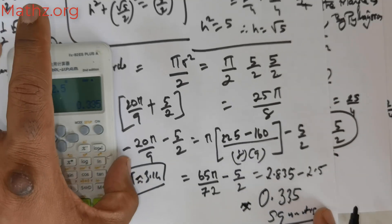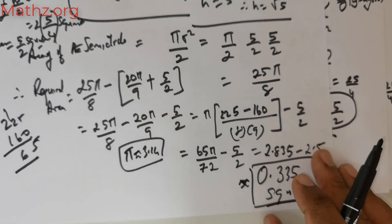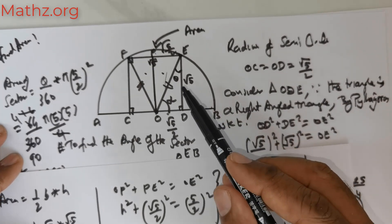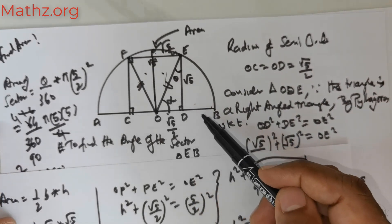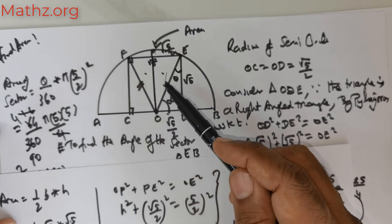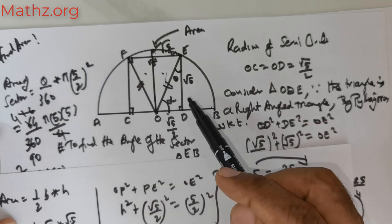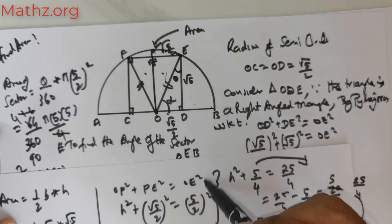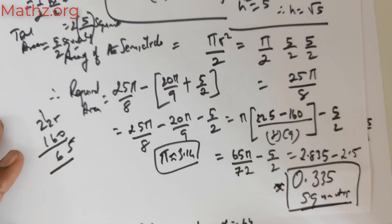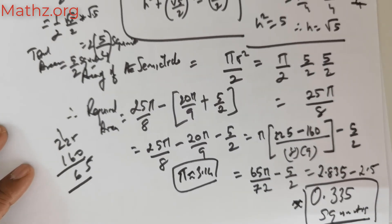This is a beautiful question. We had to first find the radius, then the sector area, then calculate the other sector area, then go to the triangle, get the triangle area, and from there find the area of the semicircle. From the area of the semicircle, deduct the area of the sectors and the area of the triangle. That gives us the value 0.335 square units. Thank you everybody — like, share and subscribe to our channel. Until we meet again, enjoy your day.